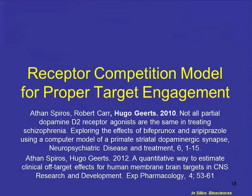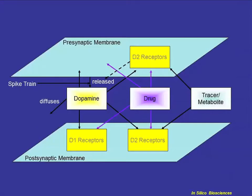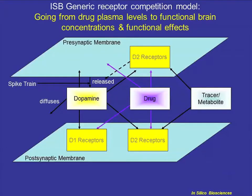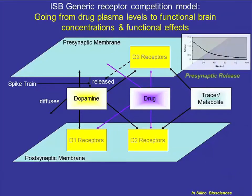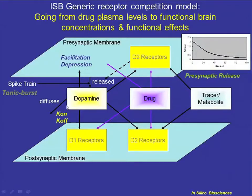Let's go into detail about the model. One major aspect is target engagement — how much of the compound gets into the brain at the appropriate target. For that, we developed a frontend simulation module that simulates the competition between different agents — in this case dopamine, the drug, and its metabolites — for the same binding site on postsynaptic or presynaptic receptors. We have also included the neurophysiology of presynaptic autoreceptor-mediated neurotransmitter release, and for certain dopaminergic synaptic models, we have facilitation and depression based on preclinical data, looking at kinetics of compounds and also tonic versus burst firing.